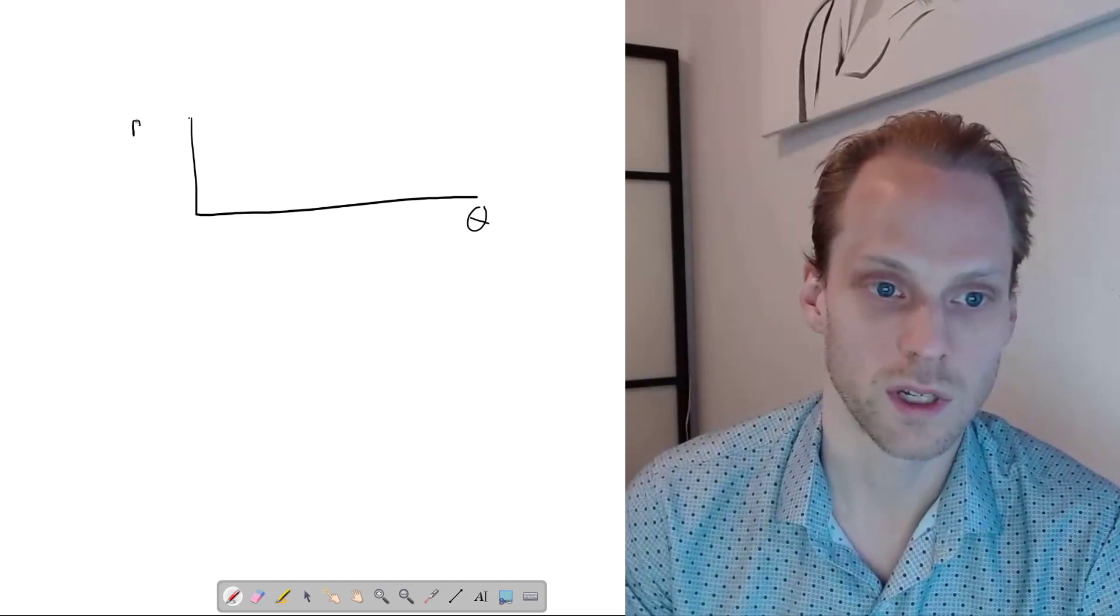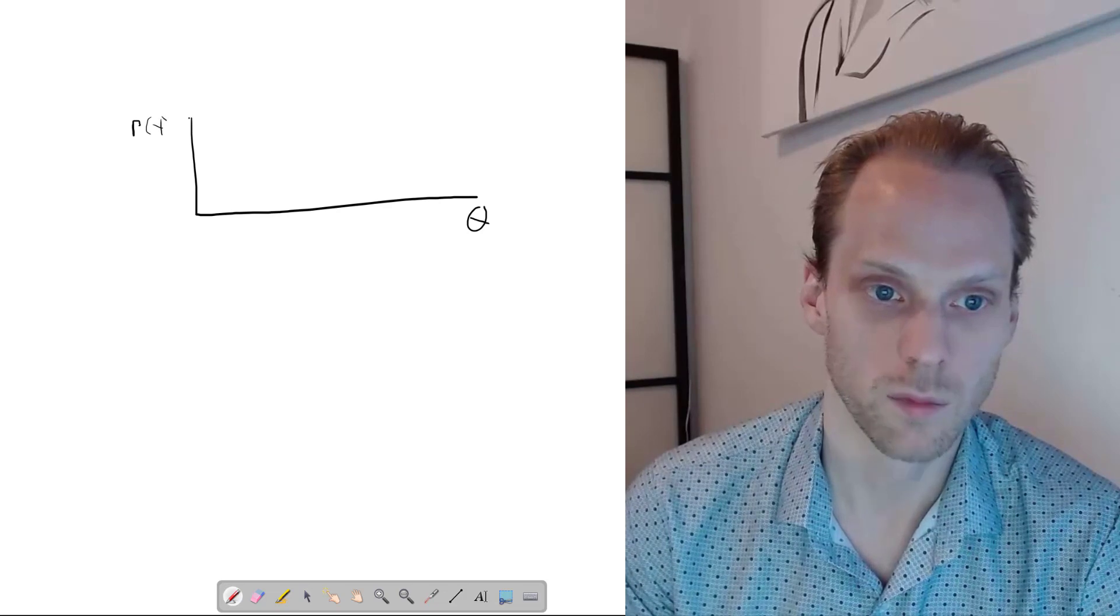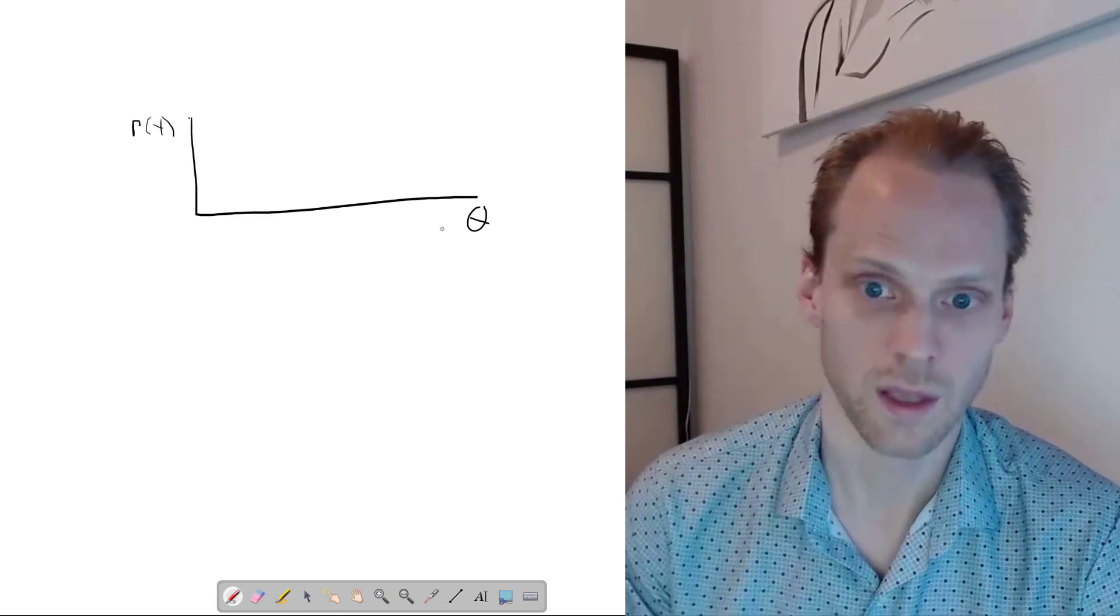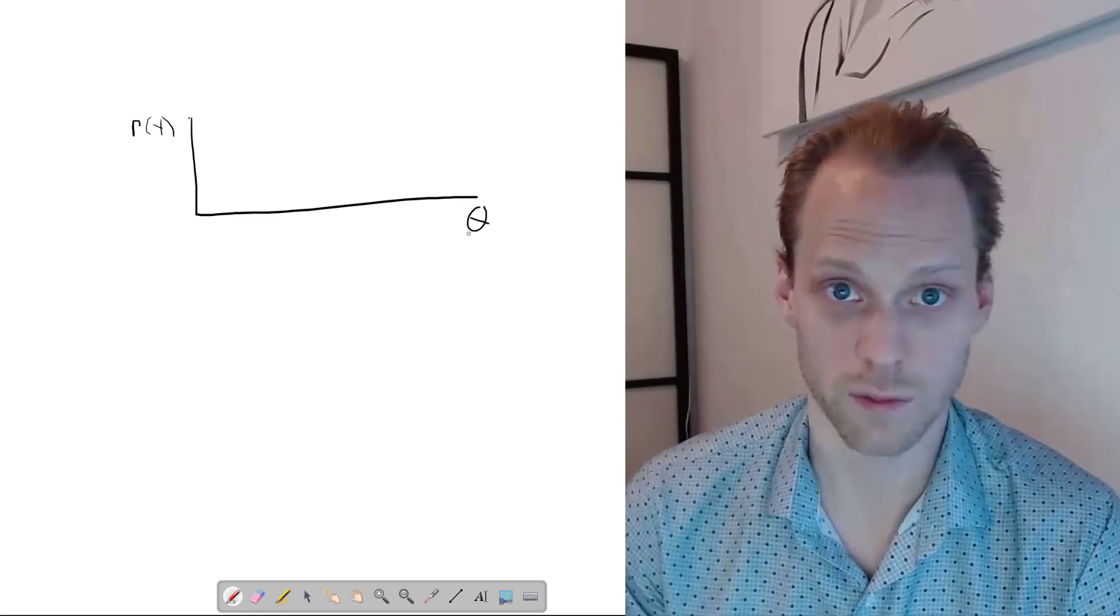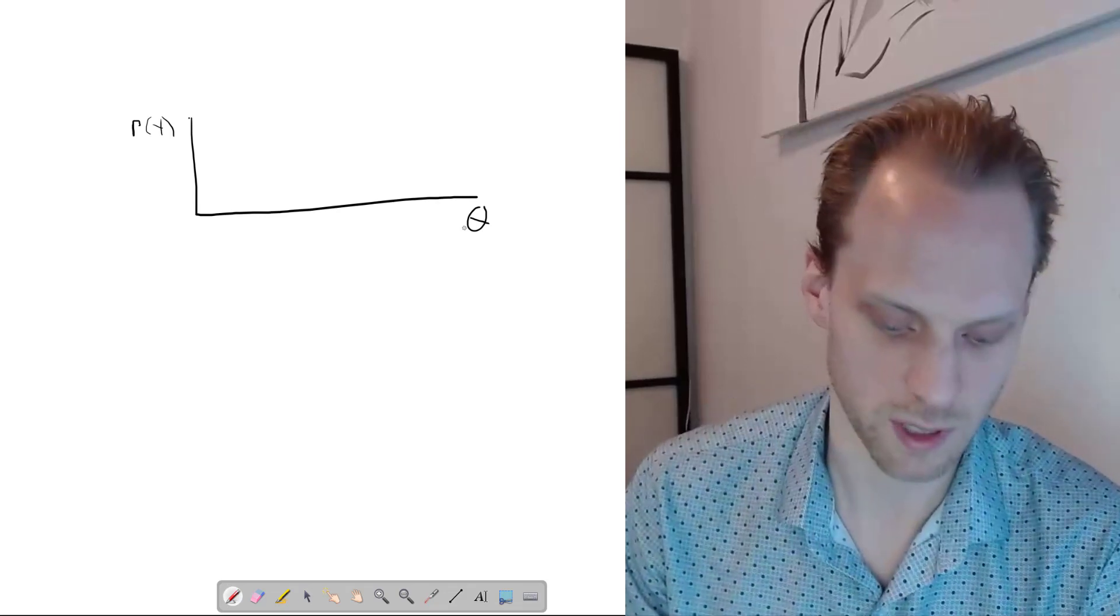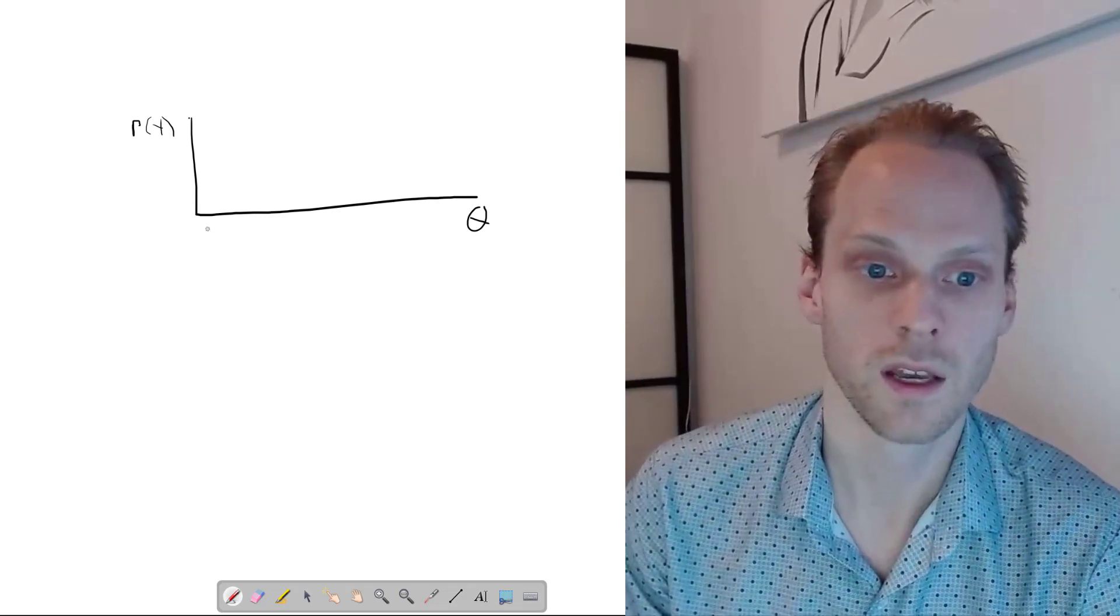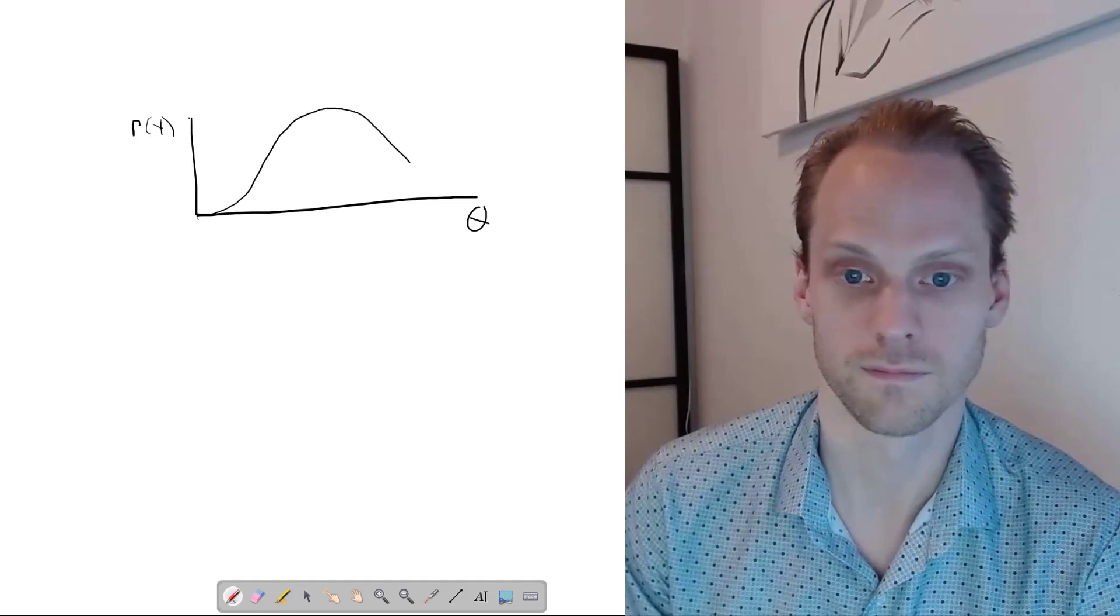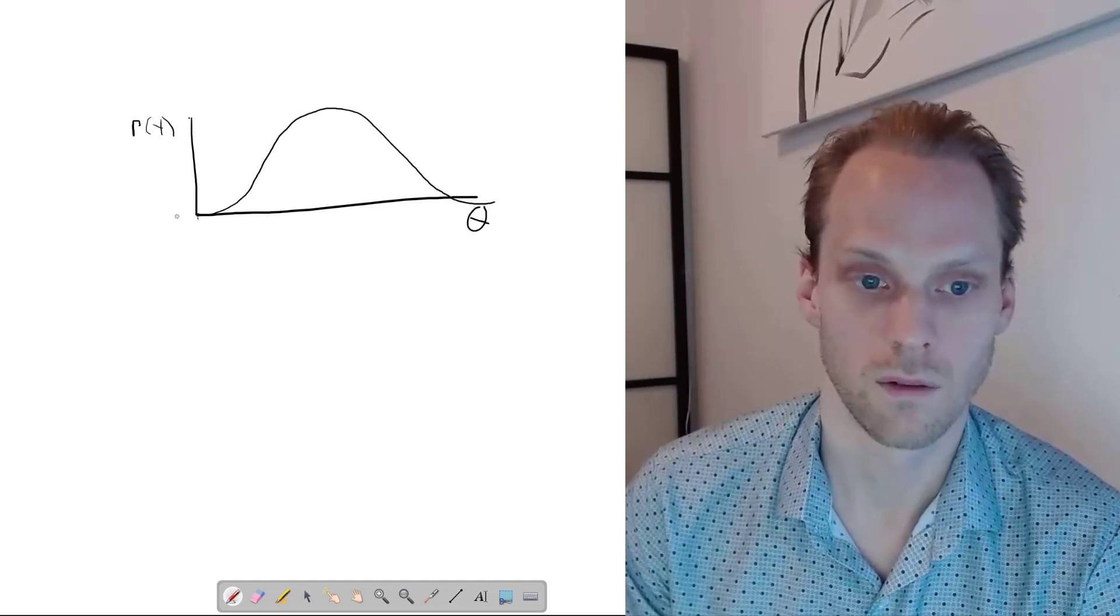On the y-axis, we can draw the probability of the data given a certain parameter. And this is only one parameter. We have a multivariate problem, so we have a very large dimensional space. But let's simplify it like this. And the likelihood function usually looks a bit like this.